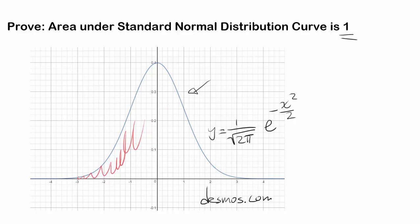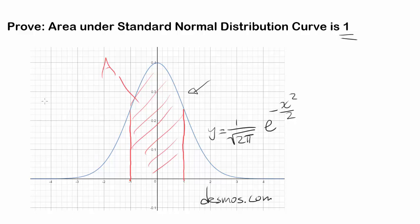Why do we want to prove that? If the entire area under the curve is 1, it's very easy to figure out the relative area of anything within the curve. For example, the probability of landing between a z-score of negative 1 and 1 is exactly that area, because you divide by 1. If the area were 2, you'd have to divide by 2, which gets messy. So we want to prove it comes out to precisely 1.